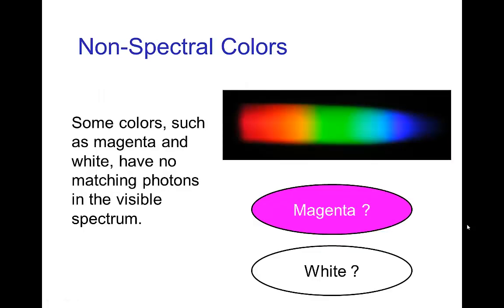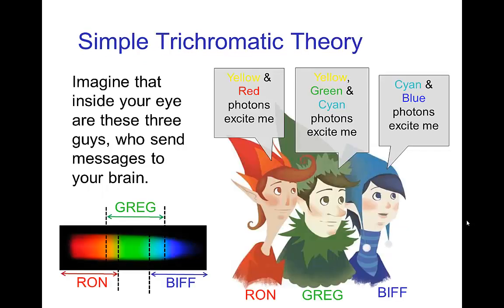The other interesting thing is there are some colors that we obviously see, and yet when we separate the spectrum and look at the different photons, we don't associate any particular photon with the color magenta or with the color white. Those are examples of non-spectral colors. To explain the connection between the spectrum and the colors we perceive, what was developed years ago was the trichromatic theory.